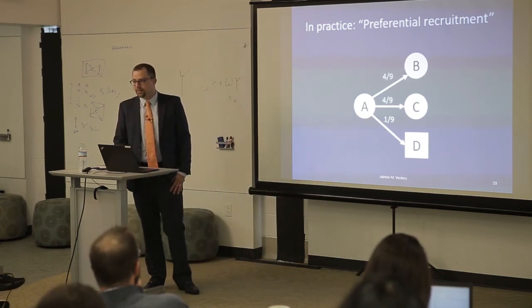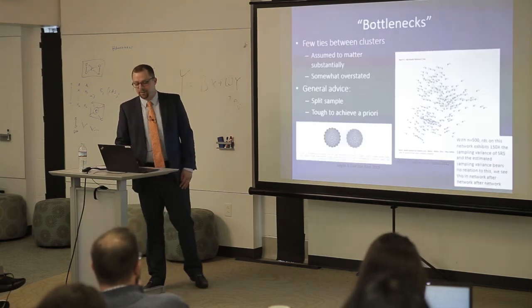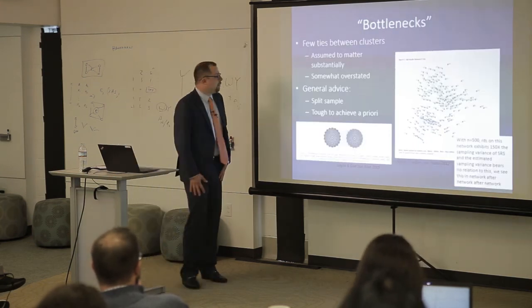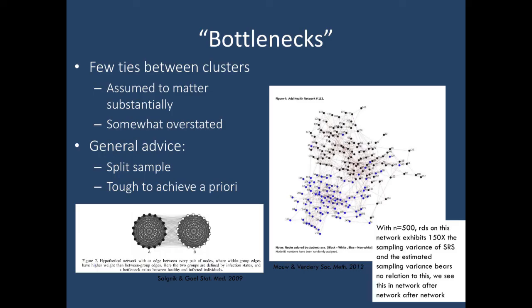The next major RDS assumption is this idea of bottlenecks. This was assumed to matter substantially in early RDS research and I think it does matter quite a bit today. If you're in a situation where you have two clusters densely connected within clusters but not many ties between clusters, it's better to try and split the sample up. For instance, if you're doing a survey in the Raleigh-Durham area, you might want one survey in Raleigh and another in Durham because there aren't that many links between them.